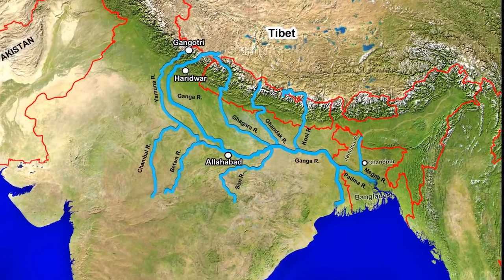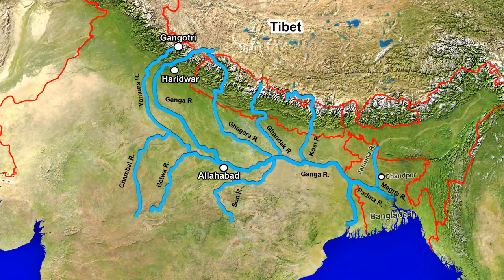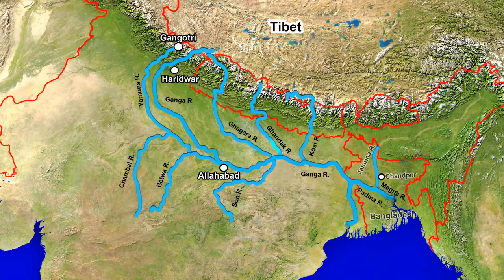The Ganga originates at the Gangotri glacier. Its left bank tributaries are Yamuna, Ghagra, Gandak, Kosi, Chambal, Betwa and Son.